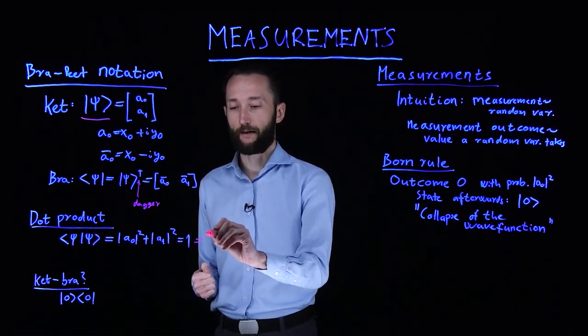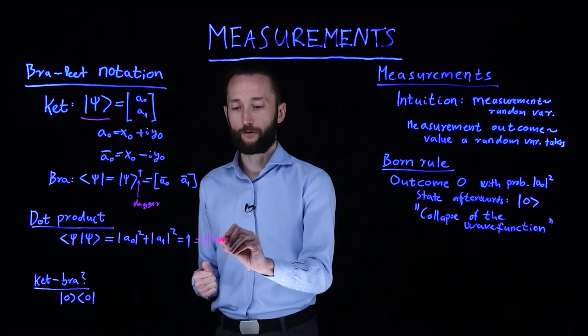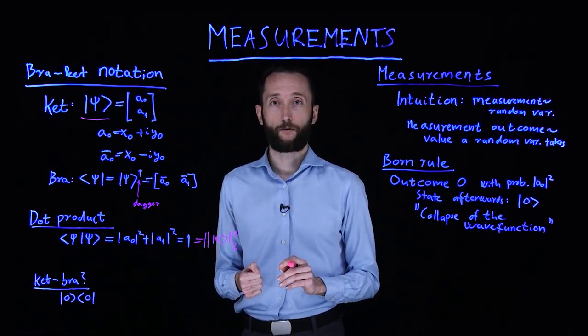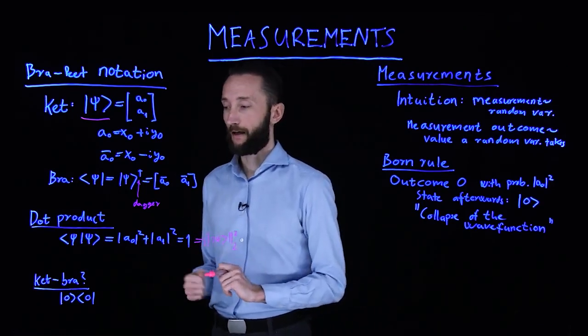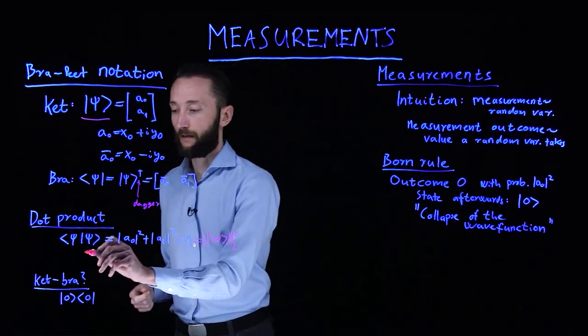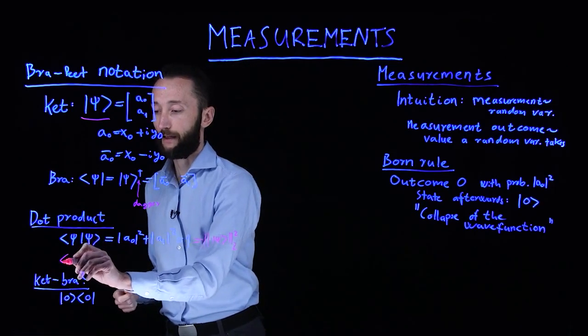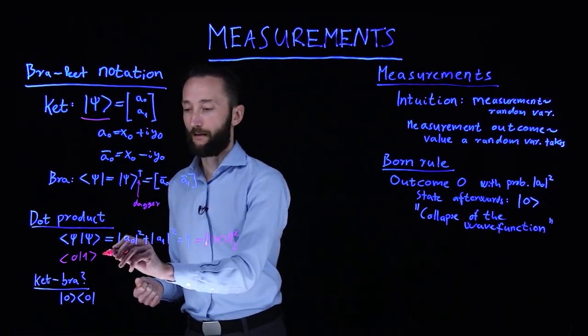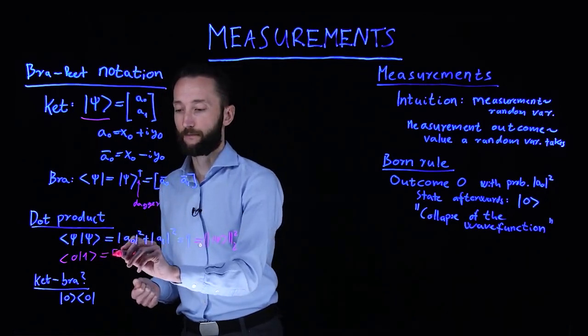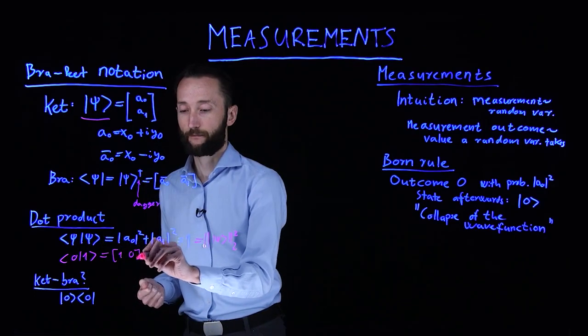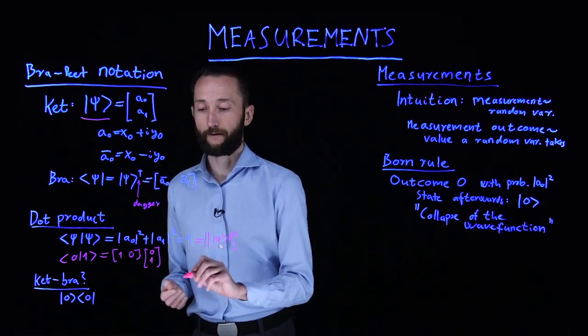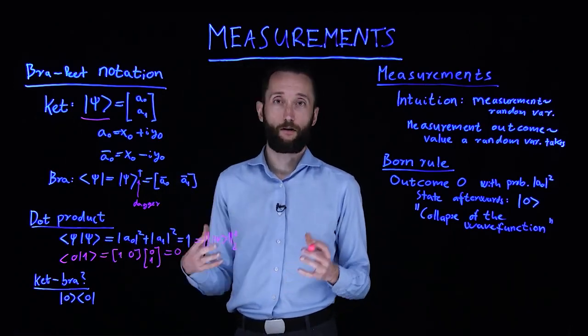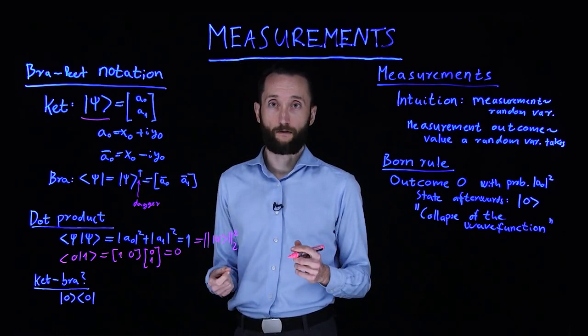This is just one particular way of writing the 2-norm, the square of the 2-norm of the quantum state. For instance, if we look at the 0 ket and its dot product with the 1 ket, then we take this row vector, multiply it by this column vector, and that's going to be 0. It's not surprising because the dot product of orthogonal vectors is always 0.